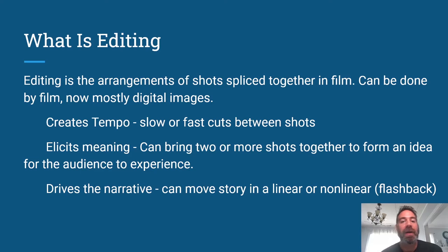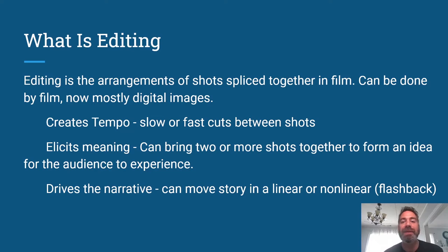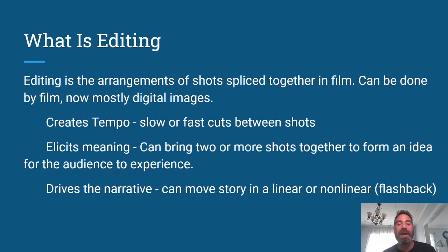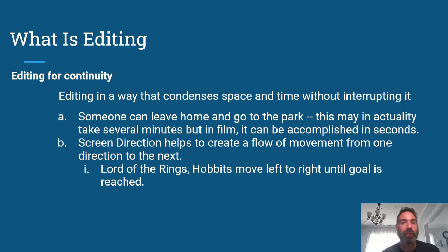So what is editing? Simply said, editing is the arrangement of shots spliced together in film. It could be done on film, but now of course it's mostly digital. It creates tempo — is it fast? Is it slow? Are there simple cuts or a lot of transitions? It can elicit meaning, bringing two shots together to form an idea. And it drives the narrative, which can be linear or nonlinear, like a flashback. So it's a very powerful tool for filmmaking.